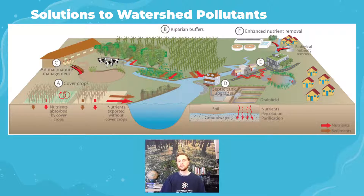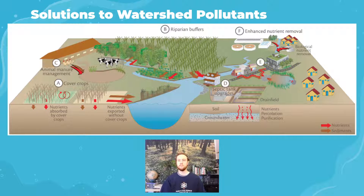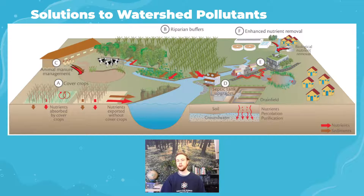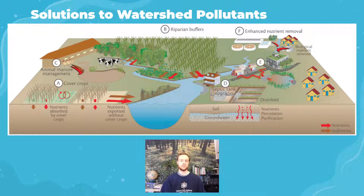Solutions to reduce nutrient inputs from agriculture include cover crops — plants grown between main crops to hold soil in place, anchor sediments, keep fertilizer on the field, and prevent runoff from entering bodies of water. Cover crops trap runoff, allow it to infiltrate back into soil, and use up excess nitrates, making them a really effective solution.